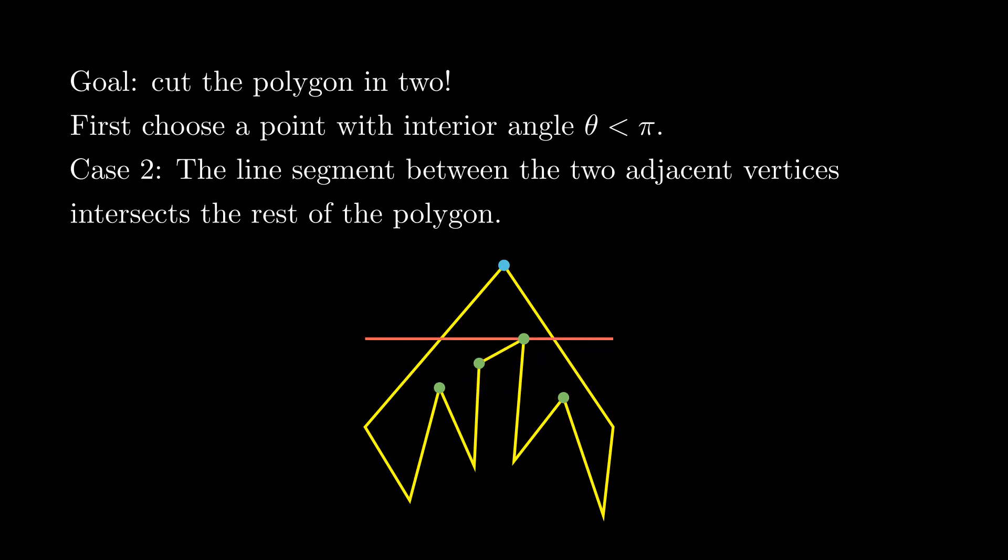What we do next is quite simple. Just slide this segment towards the point we initially chose. It will intersect all vertices inside this triangle, and we stop at the last vertex touched by this process.